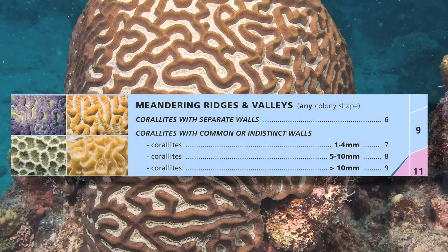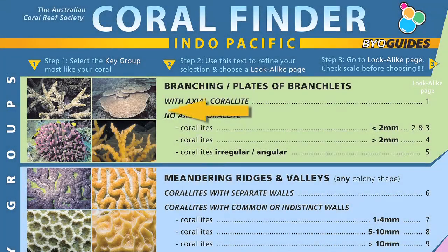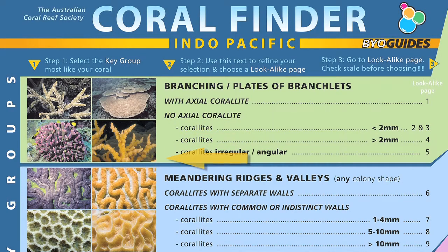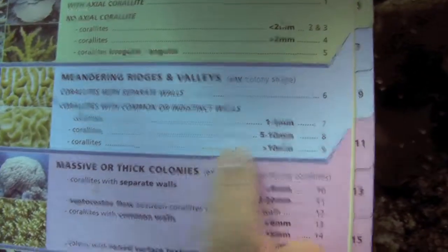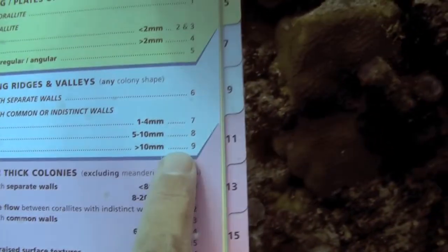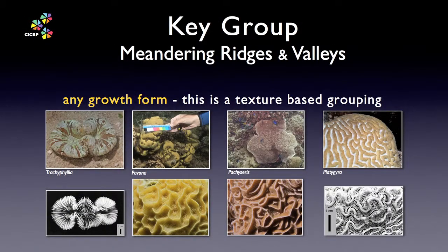The first thing to note about the meandering key group is that it focuses on the apparent surface texture of a coral colony. By comparison, the branching key group worked with the growth form of the colony. It doesn't matter that they are different approaches. The Coral Finder's design strives to use practical features that you can see in the field, so the meandering texture can apply to any growth form.